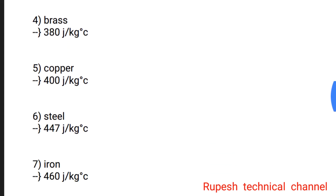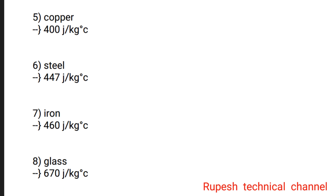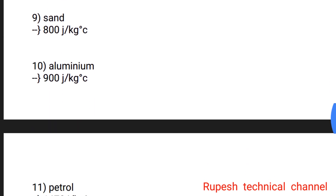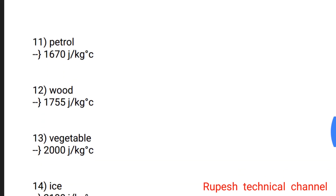Question number 5: Copper — 400 joule per kg degree Celsius. Question number 6: Steel — 447 joule per kg degree Celsius. Question number 7: Iron — 460 joule per kg degree Celsius. Question number 8: Glass — 670 joule per kg degree Celsius. Question number 9: Sand — 800 joule per kg degree Celsius. Question number 10: Aluminium — 900 joule per kg degree Celsius.